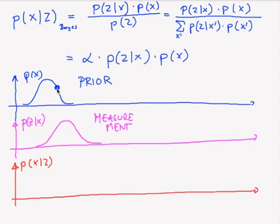So, this is p(x), and we have to multiply this by p(z|x), and this gives us p(x|z). And so, in the end, this curve might look like this. And this is called the posterior, because it is the probability of being at x after we incorporate our measurement.